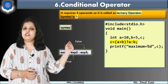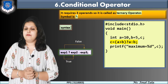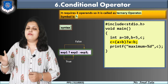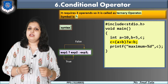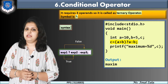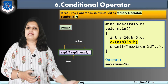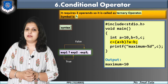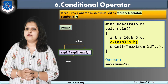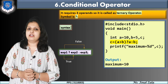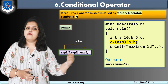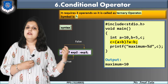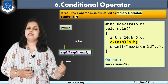How does it execute? Check the values: 10 > 5 is true, so the true part — A — is assigned to C, making C = 10. We print C as the maximum value. If instead B = 50, the condition 10 > 50 is false, so the false part — B = 50 — is assigned to C. The output would be: maximum = 50. This is how the conditional operator works.